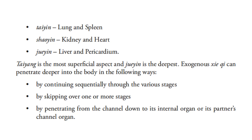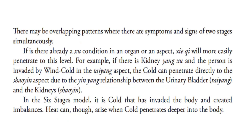Exogenous pathogenic chi can penetrate deeper into the body in the following ways: first, by continuing sequentially through the various stages; next, by skipping over one or more stages; and by penetrating from the channel down to its internal organs or its partner's channel organ. There may be overlapping patterns where there are symptoms and signs of two stages simultaneously. If there is already a deficient condition in an organ or an aspect, pathogenic chi will more easily penetrate to this level. For example, if there is kidney yang deficiency and the person is invaded by wind cold in the taiyin aspect, the cold can penetrate directly to the xiaoyin aspect due to the yin-yang relationship between the urinary bladder, which is taiyang, and the kidneys, which is xiaoyin.